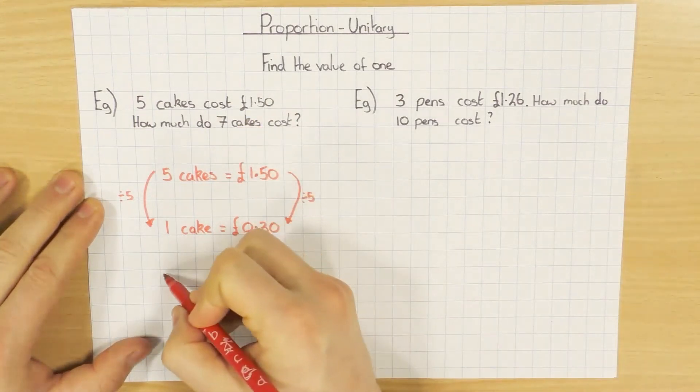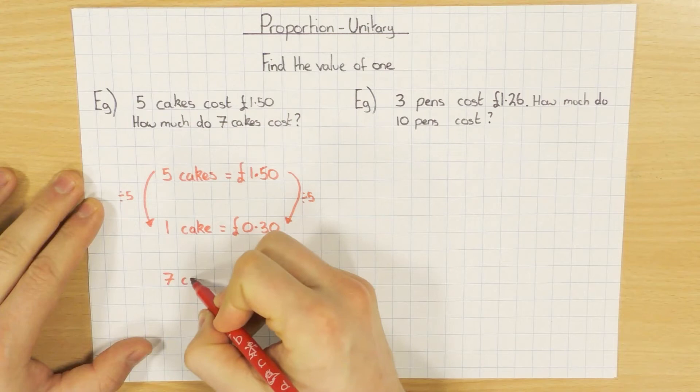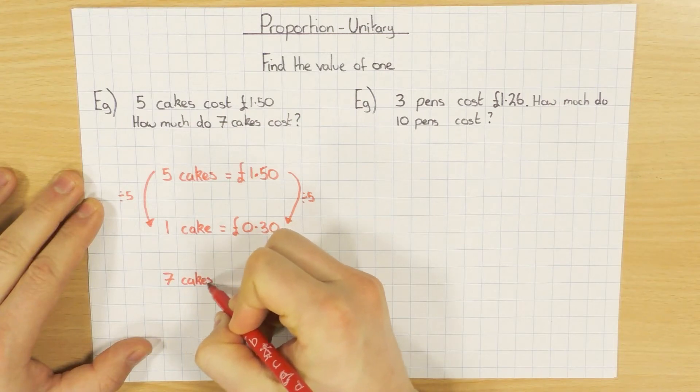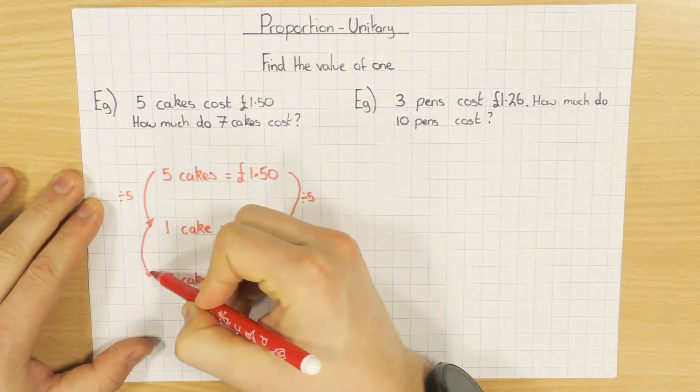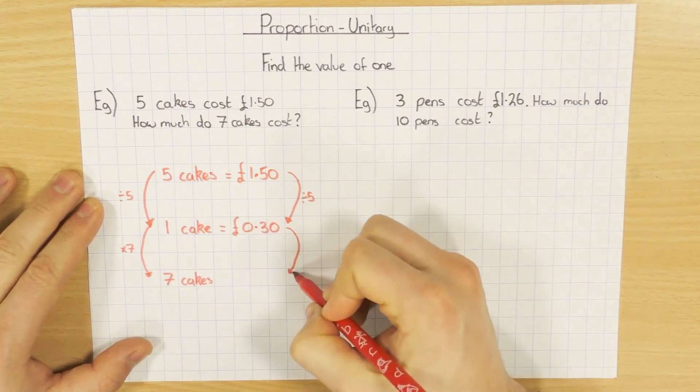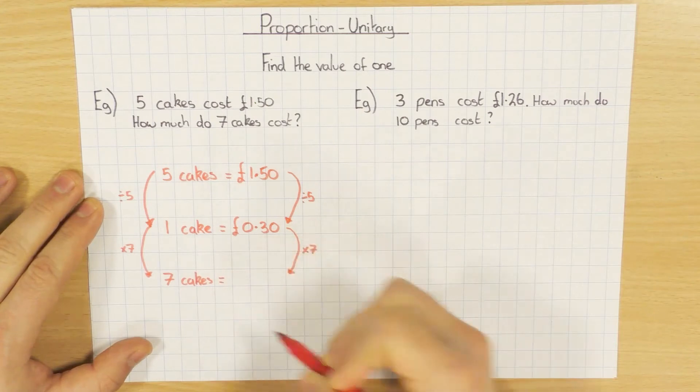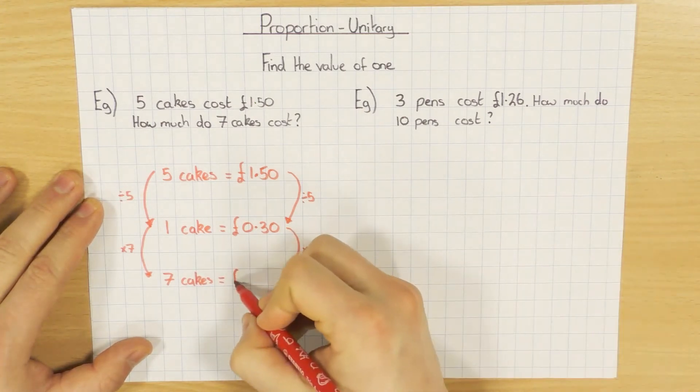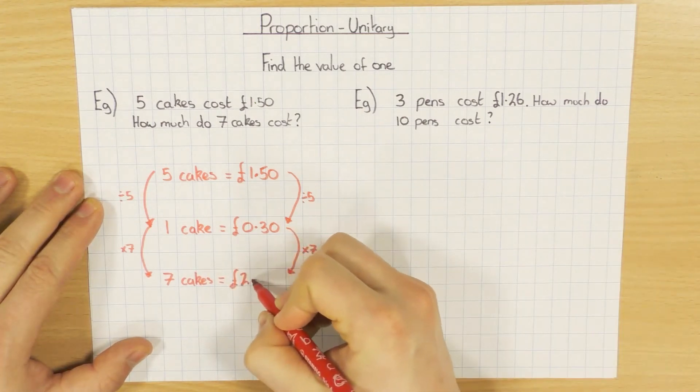And then you can then go back to the question, and actually we care about working out what 7 cakes is actually worth. So how do you go from 1 to 7? You guessed it, we times by 7. And obviously we need to times by 7 on the right hand side as well. And that comes out at £2.10.